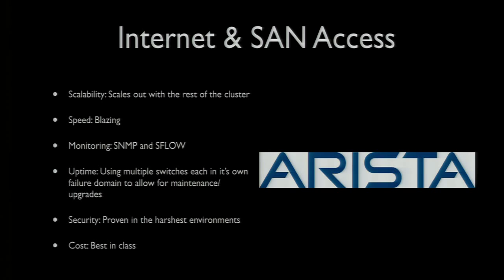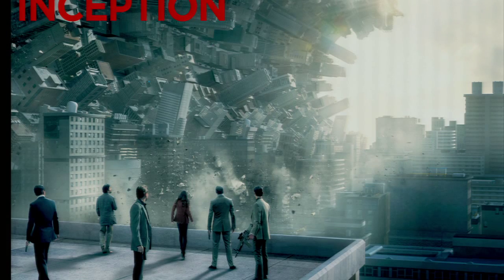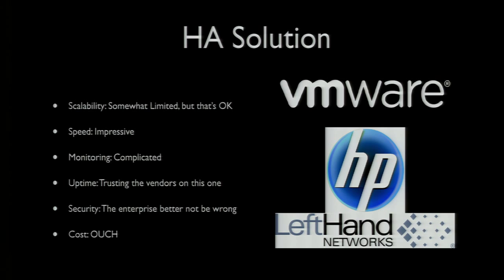We also use Arista switches for our internet and SAN access points. When we were designing our infrastructure we wanted all of our OpenStack API endpoints to be inside VMs — and if only there was some open-source cloud infrastructure orchestration platform to manage all of those VMs. We're doing this for two reasons: we wanted to scale and we wanted high availability. To start with we didn't have time to implement everything the same way, and running OpenStack to run OpenStack is a little inception-like. So we went the enterprise route and bought VMware licenses, running it on an HP LeftHand storage platform. It's not cheap, but it works and gives us the ability to focus on getting the product out the door — then we can go back and build it all on open-source architecture and use OpenStack to drive OpenStack.